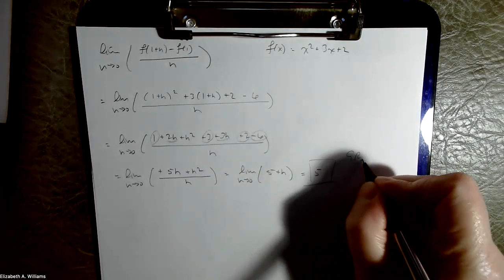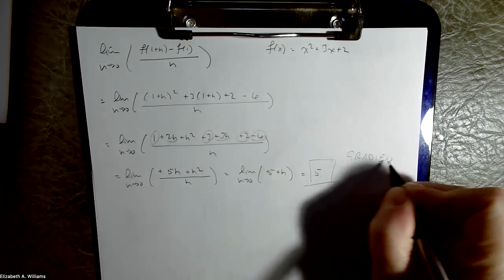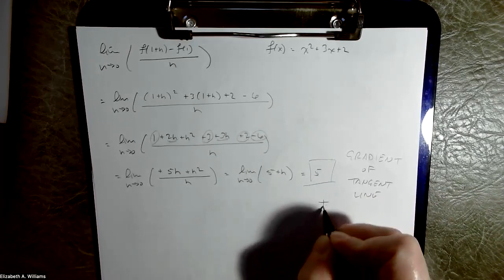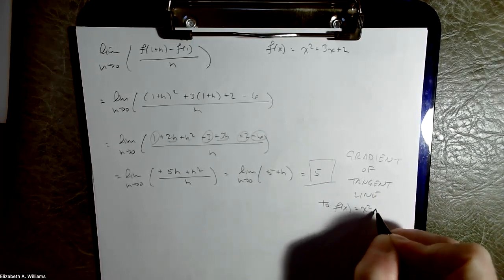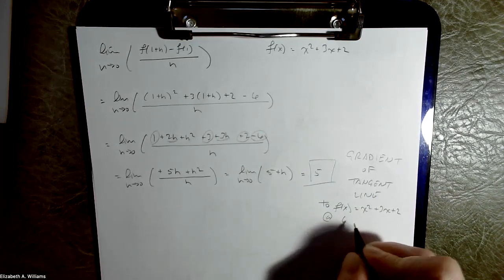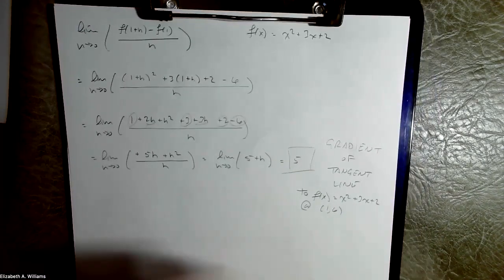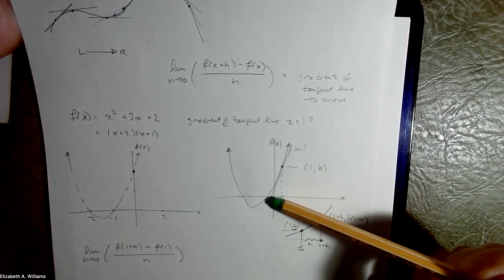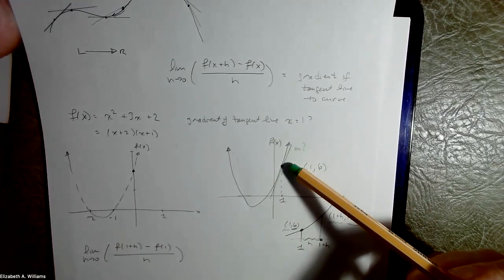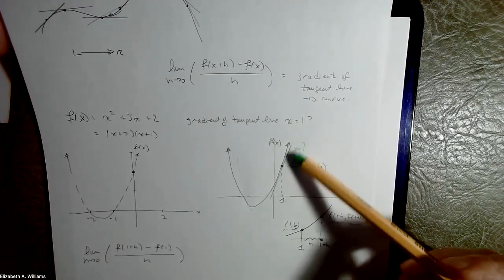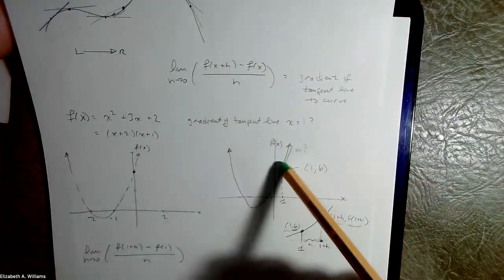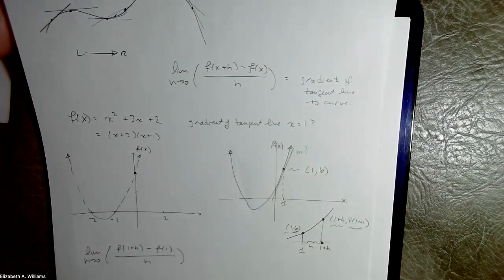And this is the gradient — the gradient of the tangent line to our function at the point (1, 6). We got a positive value, which means it's a tilty-up tangent line — as you read from left to right, it's tilty up. That's what we predicted. And I reckon it would be a little bit on the steep side. 5 is certainly not a shallow line — it's a steep line. That's a reasonable answer.